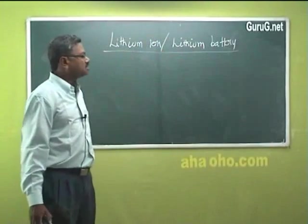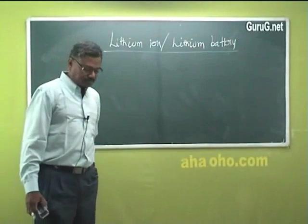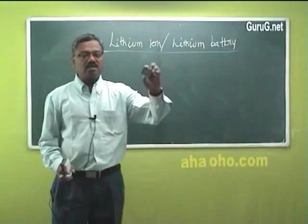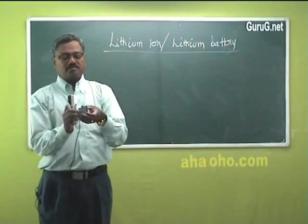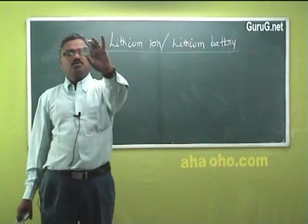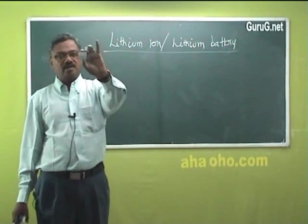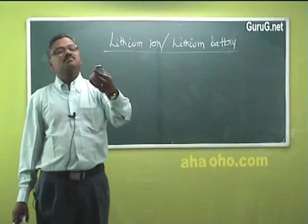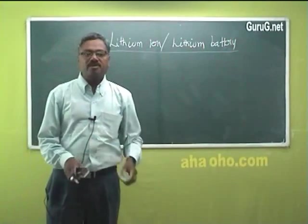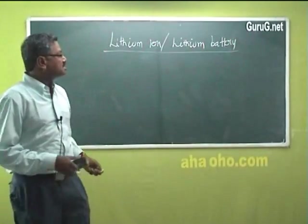This is a lithium-ion battery that you use in cameras, cell phones and laptops. This is a simple one. The voltage of this lithium-ion battery is 3.7 volts.